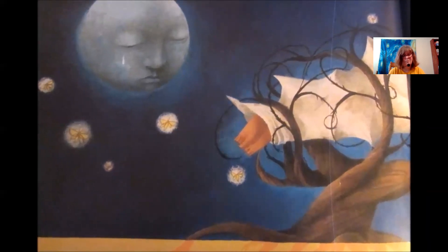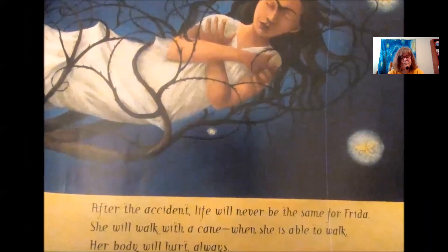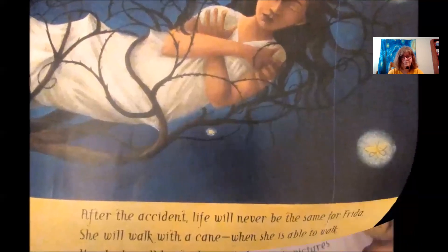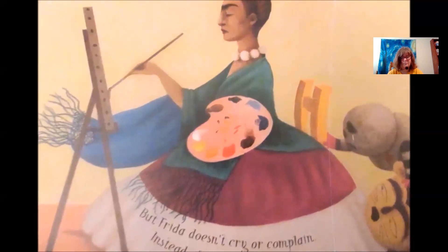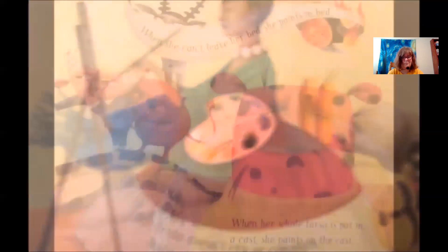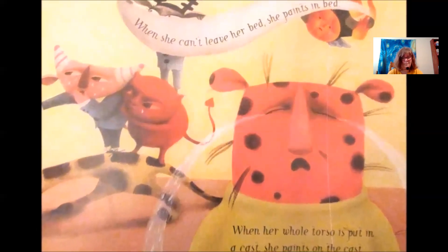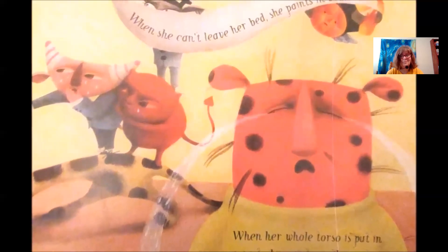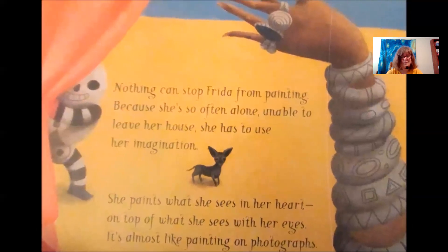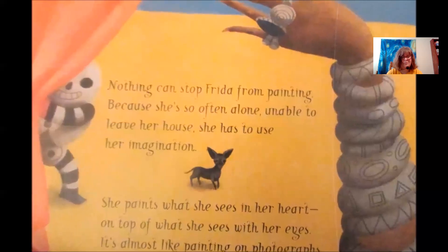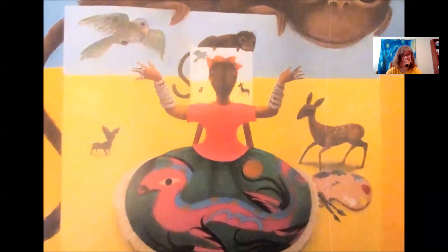After the accident, life will never be the same for Frida. She will walk with a cane when she is able to walk, and her body will hurt always. But Frida doesn't cry or complain. Instead of crying, she paints pictures of herself crying. When she can't leave her bed, she paints in bed. When her whole torso is put in a cast, she paints on the cast. Nothing can stop Frida from painting. Because she is so often alone and unable to leave her house, she has to use her imagination — she paints what she sees in her heart, on top of what she sees with her eyes.